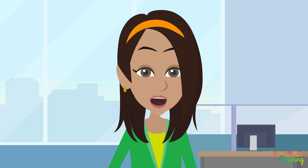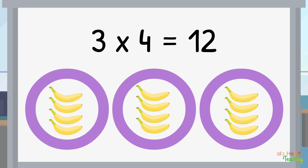Now I want to show you something very special. Are you ready? We just worked out that 3 groups of 4 equals 12. The first number is known as the multiplicand. The second number is known as the multiplier. Okay, here comes the amazing part — we're going to swap the multiplicand and the multiplier.